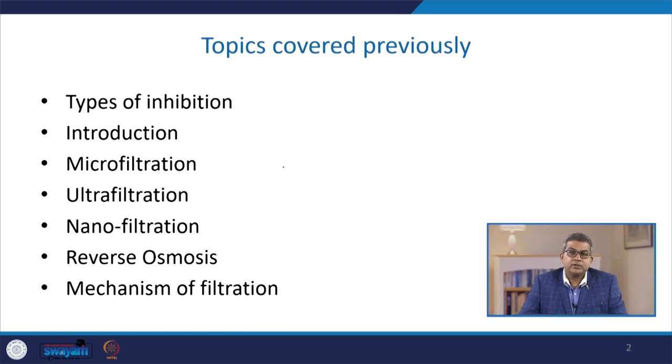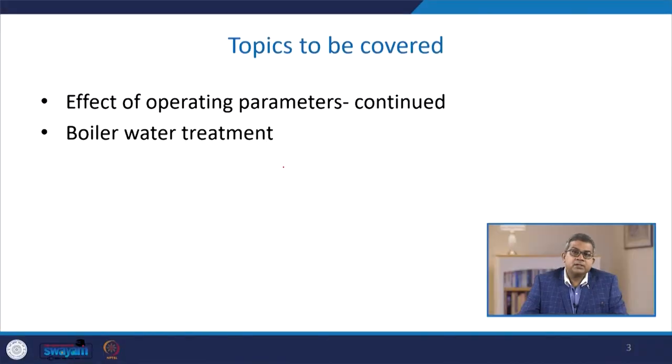Welcome to the Boiler Water Treatment concept under Chemical Process Utilities. Before we discuss boiler water treatment, we have covered topics in the previous lecture related to different types of inhibition, introduction to micro filtration, ultra filtration, nano filtration, reverse osmosis, and the mechanism of filtration. In continuation with the mechanism of filtration, we will discuss the various effects of operating parameters in this segment.